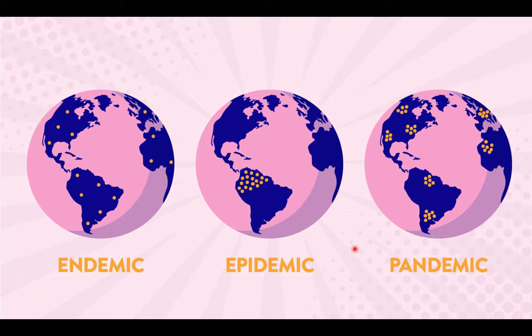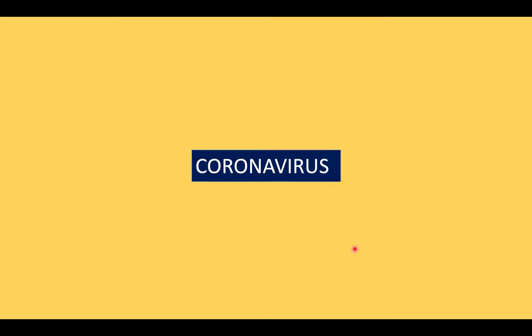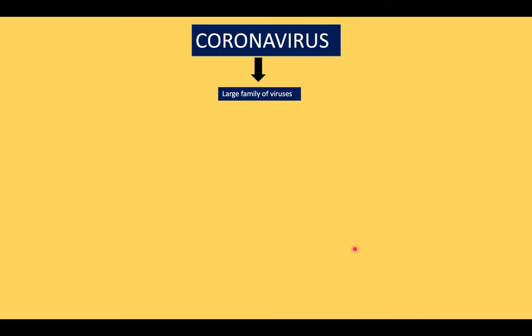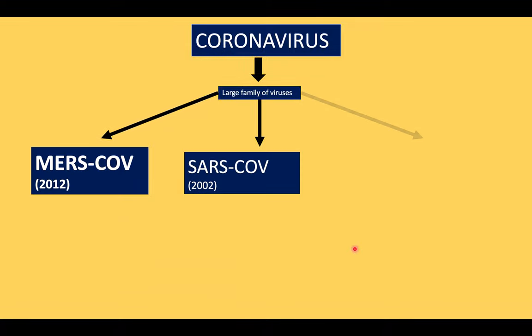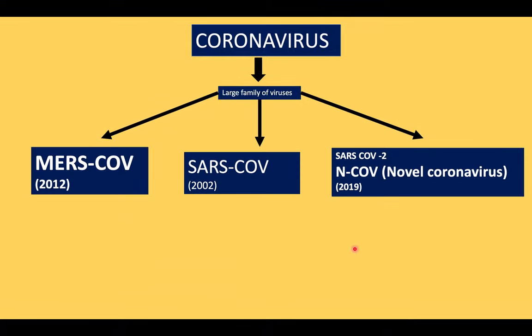Coronaviruses are a large family of viruses. The three main ones we know of are: MERS-CoV, found in 2012; SARS-CoV, found in 2002; and the latest one, previously named SARS-CoV-2, now known as novel coronavirus or COVID-19, identified in 2019.